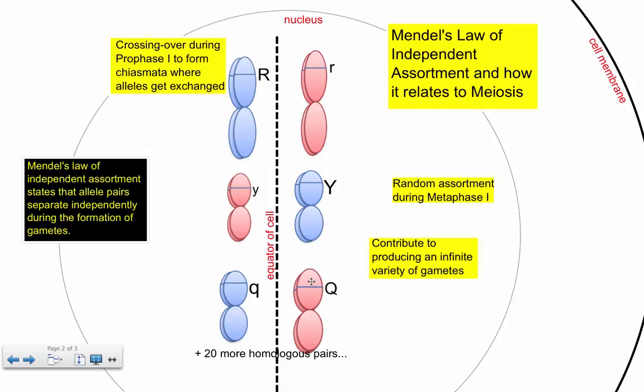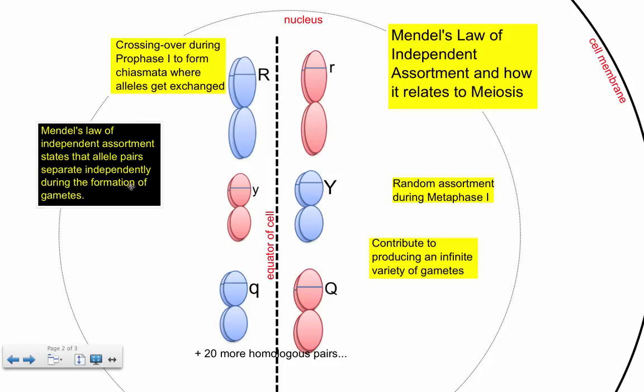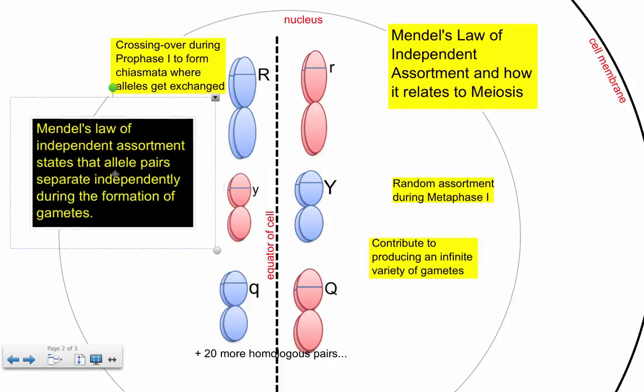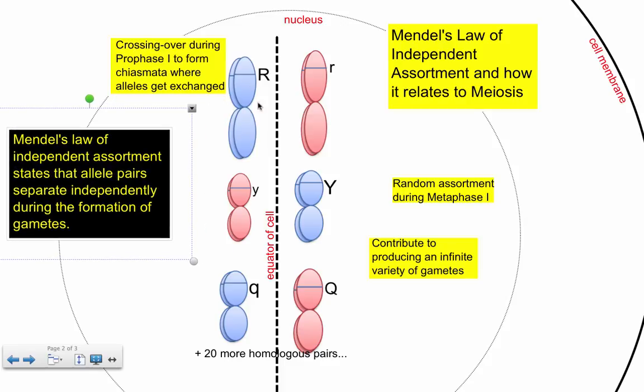It turns out that Punnett's squares, Punnett's squares and all the predicted ratios you know 25% 25% that stuff only holds true if Mendel's law of independent assortment holds true. And his law only holds true if we are talking about genes that are on different chromosomes.